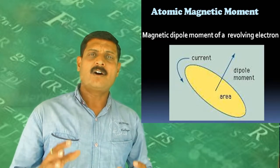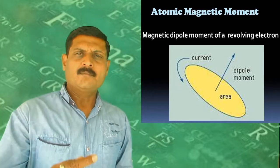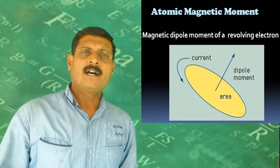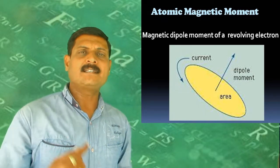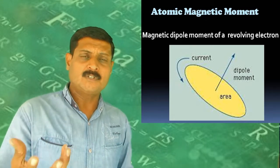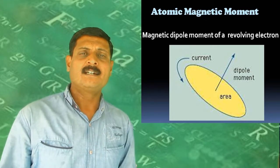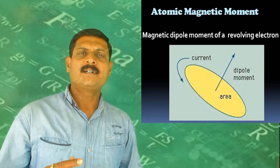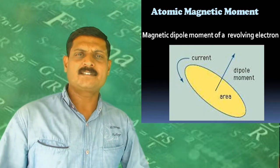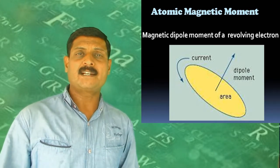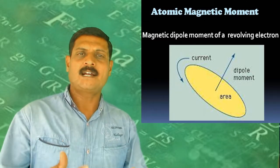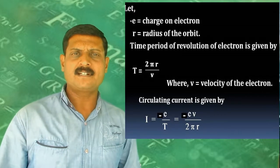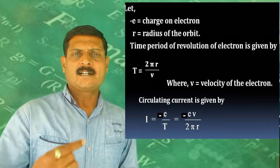The electron revolving around the nucleus in a stable circular orbit undergoes uniform circular motion. This motion can be considered as a current loop, since flow of electrons is nothing but flow of current. Due to this current loop, the electron possesses some magnetic dipole moment, giving rise to the atomic magnetic dipole moment.